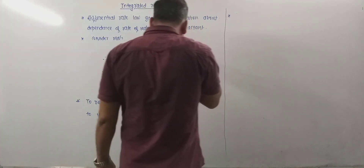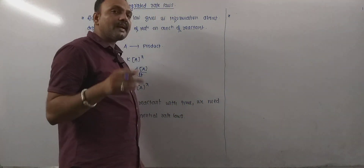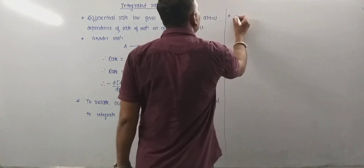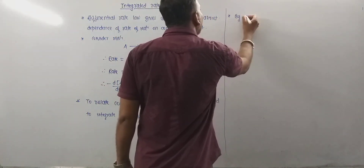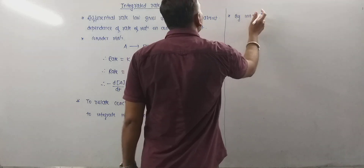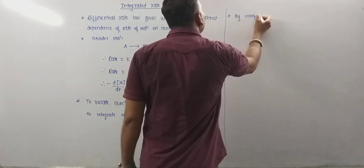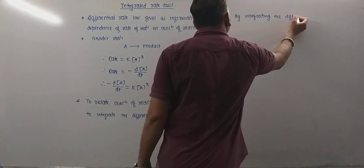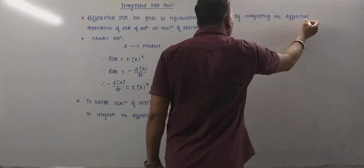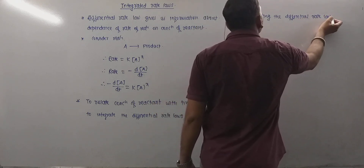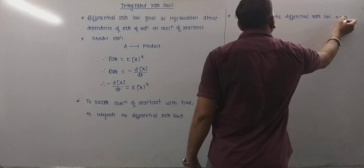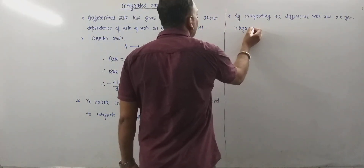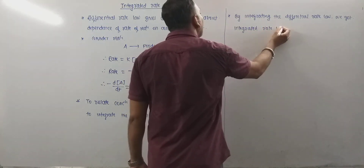Integrated rate law is nothing but the rate law obtained by integrating the differential rate law. By integrating the differential rate law, we get integrated rate laws.